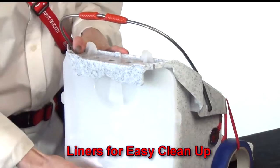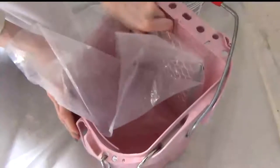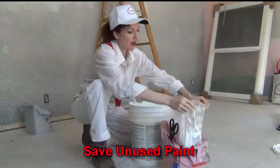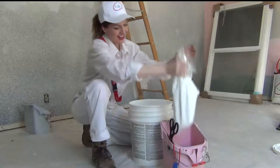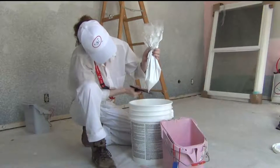The optional liners make cleanup and color changes quick and easy. When you're done, remove the grid, pull the liner out, snip a corner, and squeeze your paint back into the can.